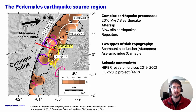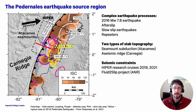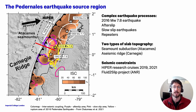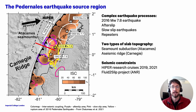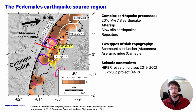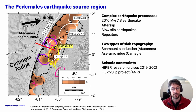Our study region is the source region of the magnitude 7.8 Pedonal Est earthquake in central Ecuador. This is a very interesting region from the point of view of earthquake processes. On top of the megathrust earthquakes we also see slow afterslip shown there in purple, slow slip earthquakes in pink, and earthquake repeaters. Caroline Chaloumon will talk more about these interesting earthquake processes in a talk later in this session.